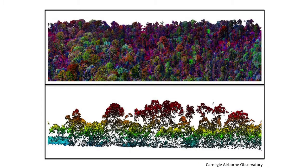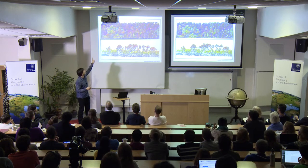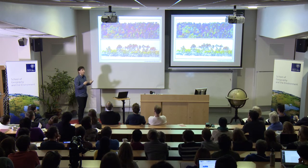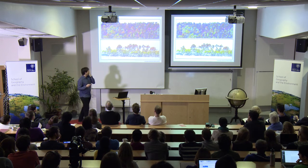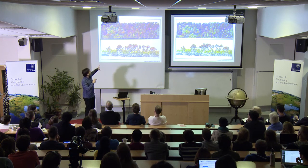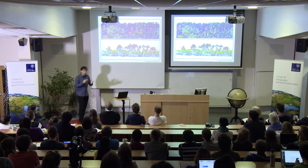Finally, this is data not from our plots but from Greg Asner's Carnegie missions. You can marry not just structure but also function. These different colors indicate different chemical compositions of these canopies. You can look at how these trees are sorting themselves — not just how these forests are structured, but how they're functioning and how these trees can coexist together.